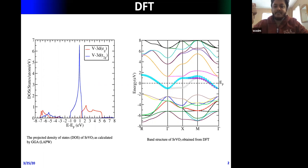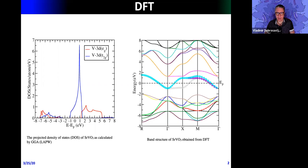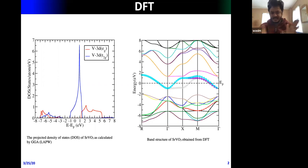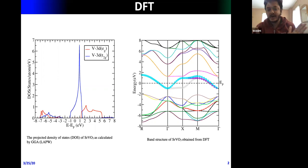First, in this LDA+DMFT scheme, we performed plain DFT calculations using Wien2k and computed the electronic structure to understand it. On the left-hand side we have the density of states and on the right-hand side the band structure.